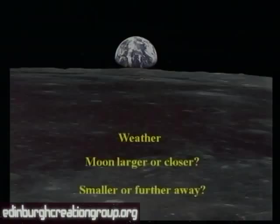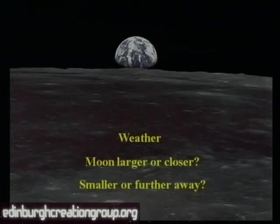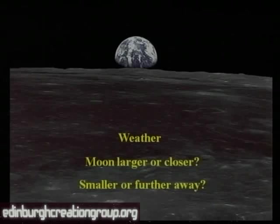Likewise, if the moon was slightly further away or smaller, the reverse would be the case — the tides would become so small that it's questionable whether there would be enough movement of water to bring nutrients to the surface and maintain the small plants living on the surface of the oceans. So the distance and size of the moon relative to our planet has a profound impact upon life on our planet.